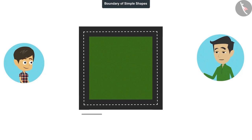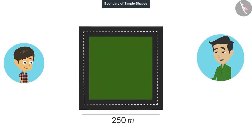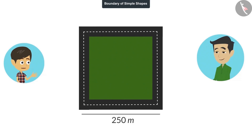One side of its length is 250 meters. Now you tell me, how many rounds do I have to walk to complete 3 kilometers? You mean, I have to find the length of this boundary? Yes. Okay, I will try.